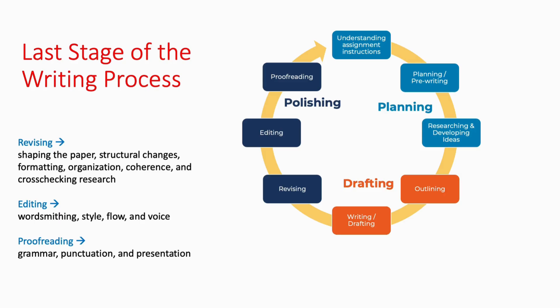This includes revising, which is shaping the paper, looking at the structure of the assignment, formatting, organization, and double-checking your research. Editing is at the sentence level, looking at wordsmithing, style, flow, and voice. And then proofreading is that nitty-gritty grammar, punctuation, and presentation.